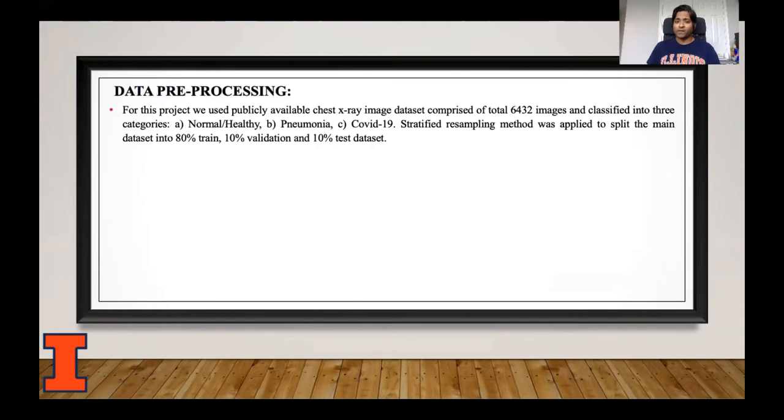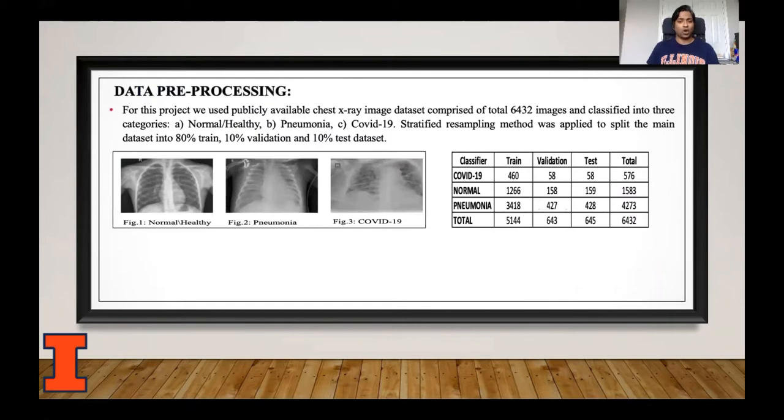In the first data preprocessing step, we extracted the data from a publicly available Kaggle data site. Our main dataset comprised of total 6,432 images and classified into three categories: normal and healthy, pneumonia, and COVID-19. Further, we applied stratified resampling method to split the main dataset into 80% train, 10% validation, and 10% test dataset.